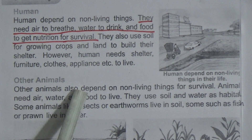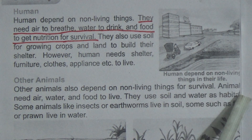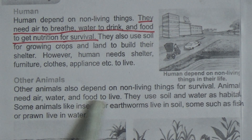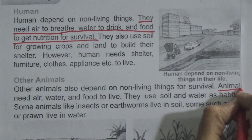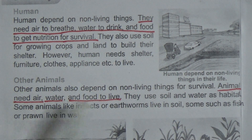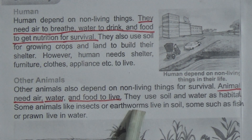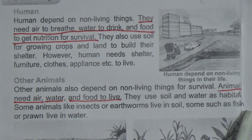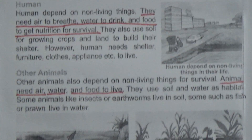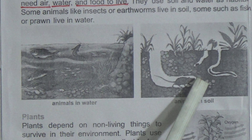Come to the next lesson. Other animals also depend on non-living things for survival. Animals need air, water, and food to live. Again, underline this line: animals need air, water, and food to live. They use soil and water as a habitat. Some animals, like insects or earthworms, live in soil. Some, such as fish and others, live in water. In the picture, we can see animals that live in water, and some animals that live in soil — like earthworms and some insects.